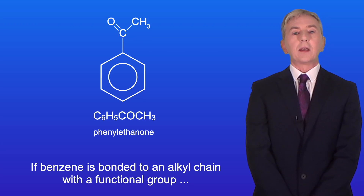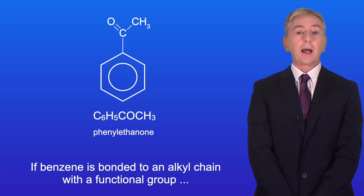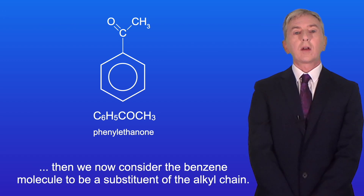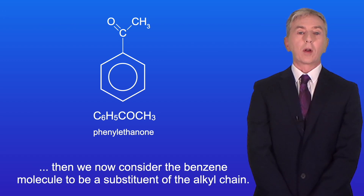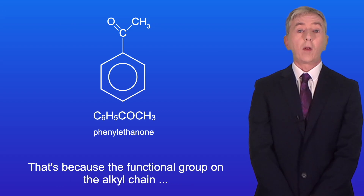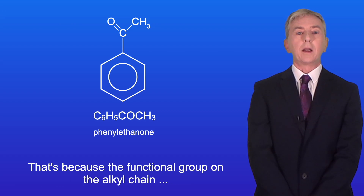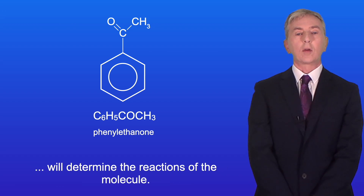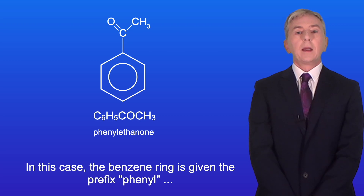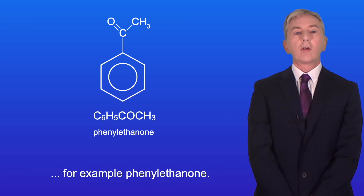Now if benzene is bonded to an alkyl chain with a functional group, then we consider the benzene molecule to be a substituent of the alkyl chain. That's because the functional group on the alkyl chain will determine the reactions of the molecule. In this case the benzene ring is given the prefix phenyl, for example phenylethanone.